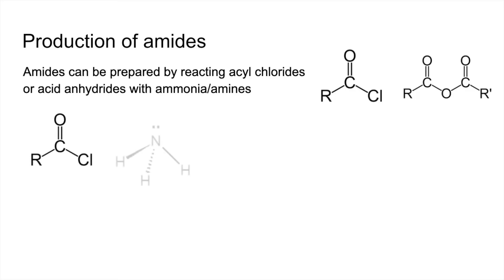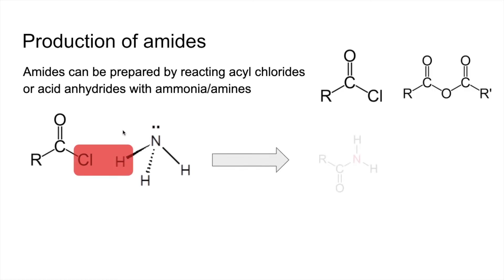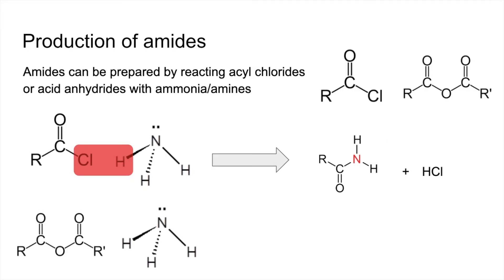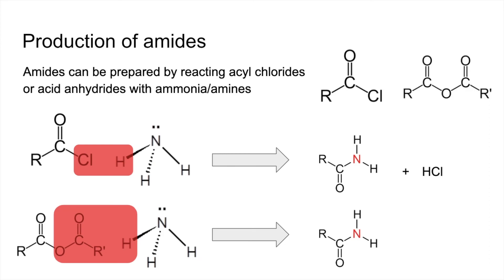So there's your acyl chloride — take some ammonia, and the way I think about it is a lasso around the HCl. Put that together and your amide is formed: R-C(=O)-NH₂. The other product is HCl. If you were using an acid anhydride, it's a very similar process, but this time the lasso takes out the carboxylic acid, so your other product is a carboxylic acid — but you still get that primary amide.